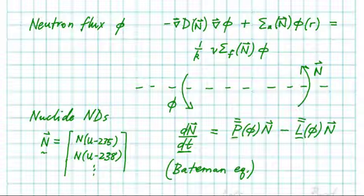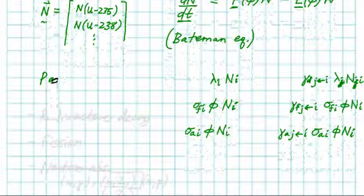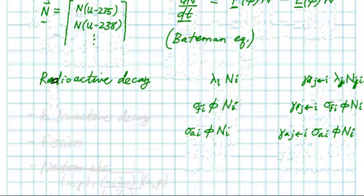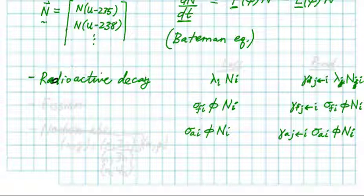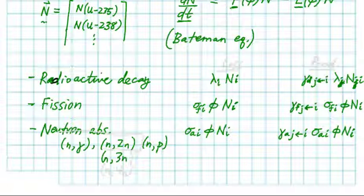So, let's talk about what goes into the Bateman equation. We're looking for the terms, the production and the loss in that equation. We've got radioactive decay, and the interesting thing about that one is, it doesn't depend on flux, but that's the only one that does not. We've got fission, and we've got neutron absorption. This is usually n-gamma, that's usually the dominant one, but you also have things like n-2n, n-p occasionally, n-3n, n-4n, and you can keep going. There's a big list here.